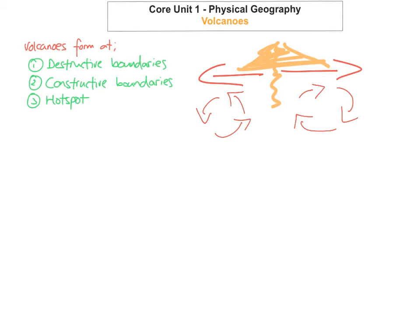Another name for constructive plate boundaries is divergent boundaries. As the plates move apart, the magma is freely able to rise up between the crack because the crack is made for it. One thing to note is there is no subduction here — because the plates aren't in collision, the heavier plate is not going to go underneath the other one.